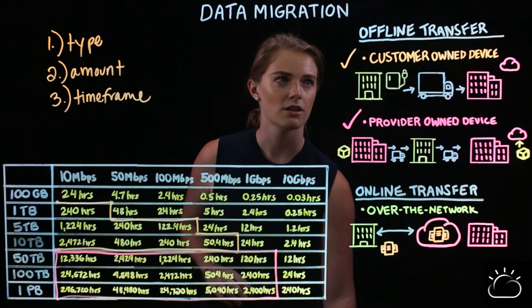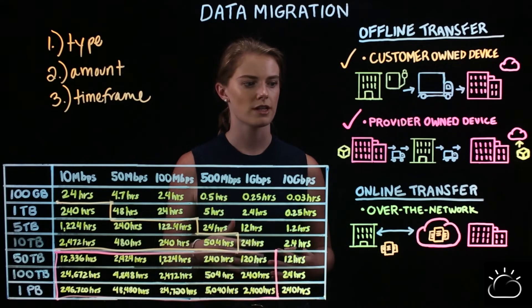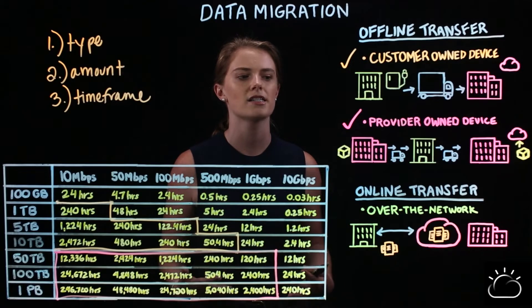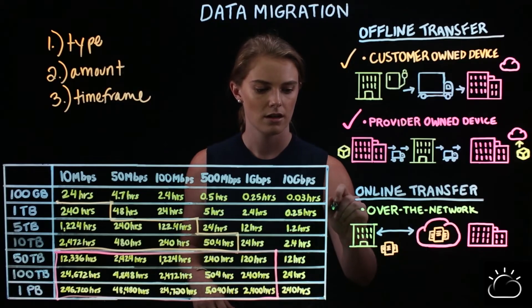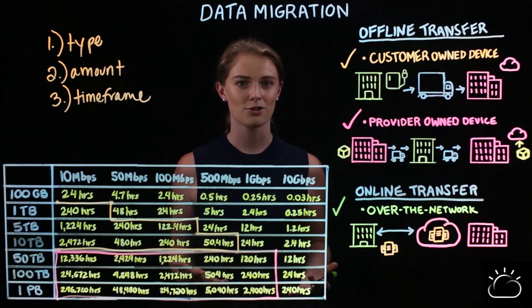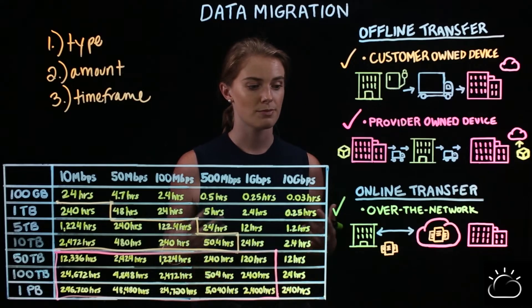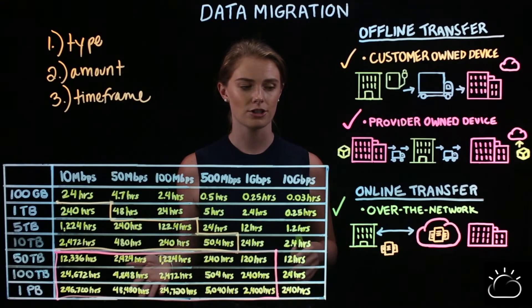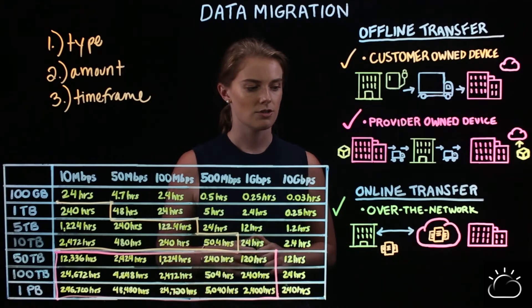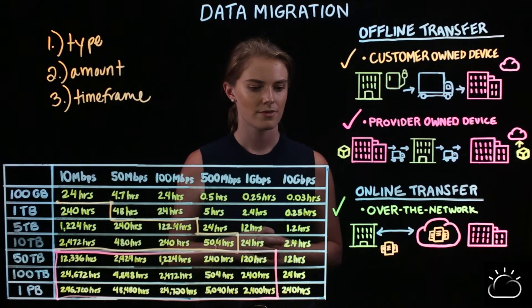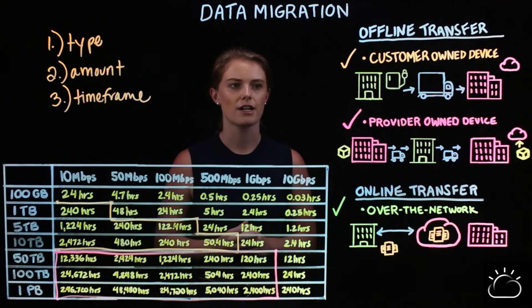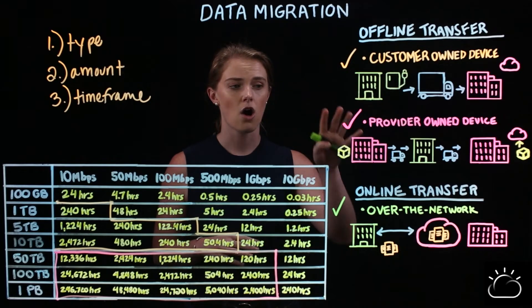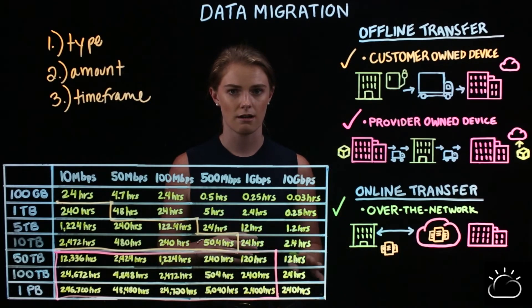If you're not looking for an offline transfer and want to transfer data over the network, or you're looking for high-speed technology, that's when you want to consider an online transfer option. You can write custom applications using high-speed transfer libraries, or spin up a high-speed transfer client at your location and connect it to the cloud provider's high-speed server cluster. Something to consider: your network connection and speed significantly impact all of these options, but especially online transfer.